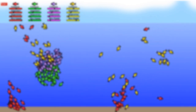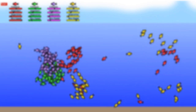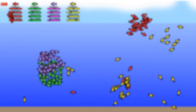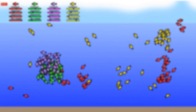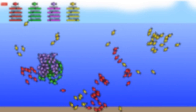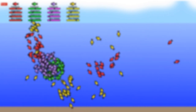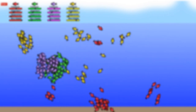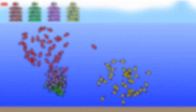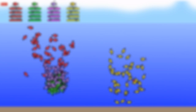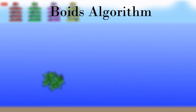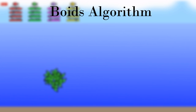To simulate the movement of populations, we can use Boids algorithm. Boids algorithm has three parts: separation, alignment, and cohesion.